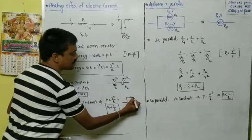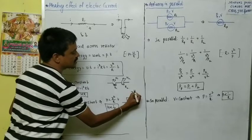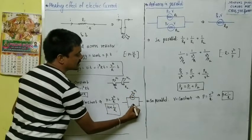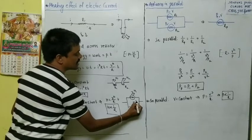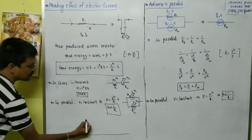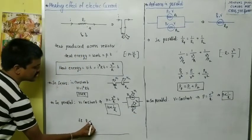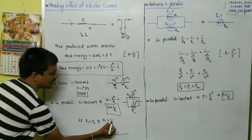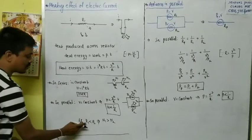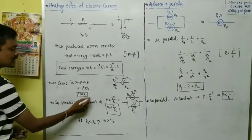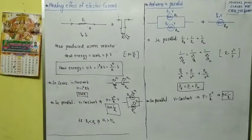For the first appliance with resistance R1 and heat H1, and the second with resistance R2 and heat H2: if R1 is less than R2, then in parallel combination H1 is greater than H2, because less resistance means more heat in parallel. This is about the heating effect of electric current.